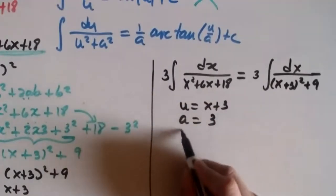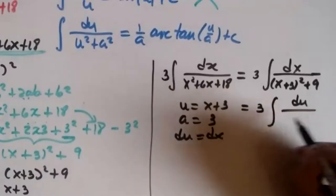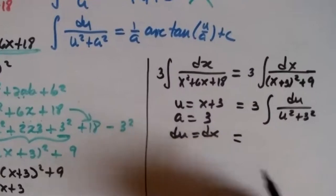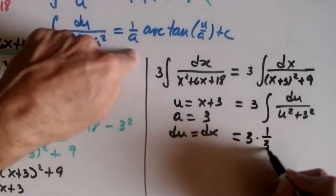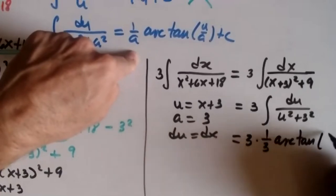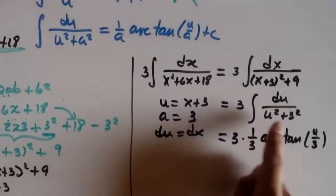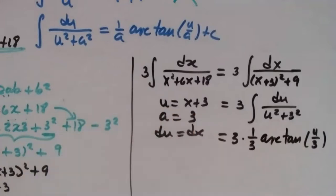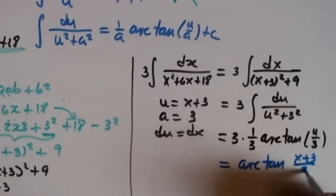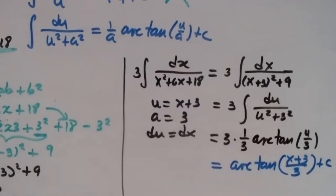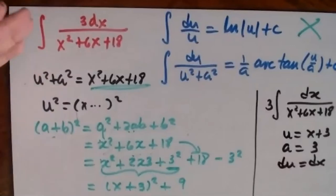Applying the formula: 3 times integral of du over (u² plus 3²) equals 3 times (1/3) arctan(u/3) plus C. The 3 and 1/3 cancel, giving arctan((x+3)/3) plus C.